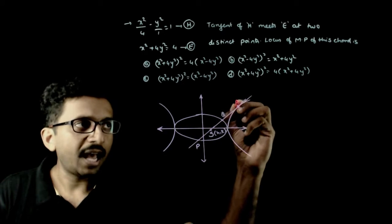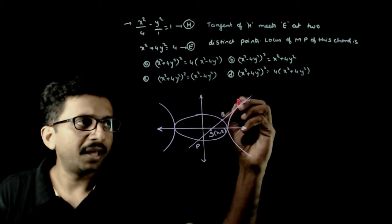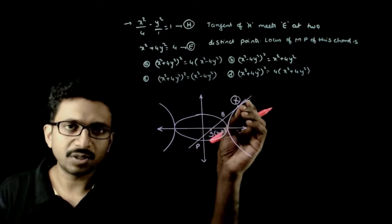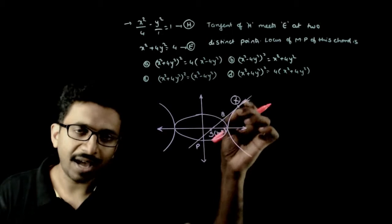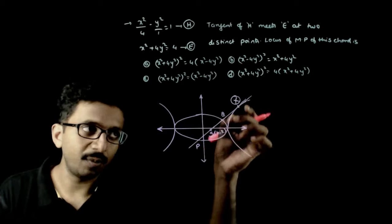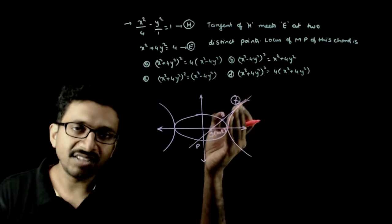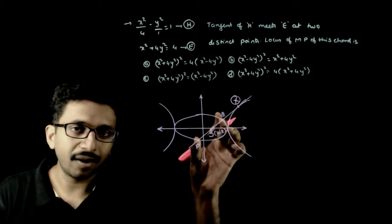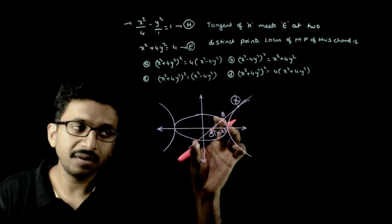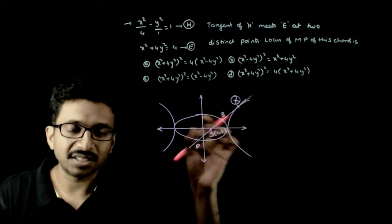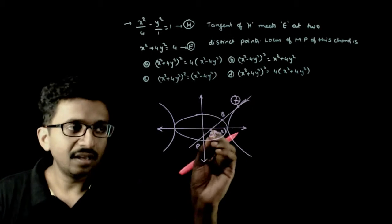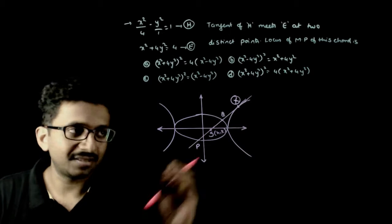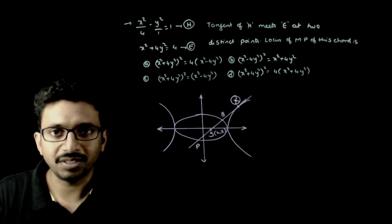If I take a point on the hyperbola, this point is moving on the hyperbola. As this point moves, the tangent changes, the intersection points change, and so the midpoint S also changes. So, what is the locus of the midpoint S of PQ? That is the question.